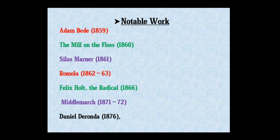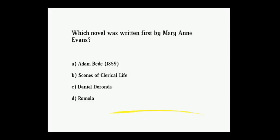Notable works: Adam Bede, The Mill on the Floss, Silas Marner, Romola, Felix Holt, Middlemarch, and Daniel Deronda. These are the most famous works of George Eliot.